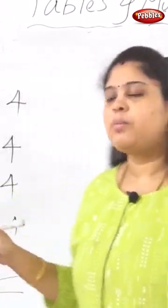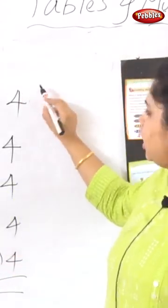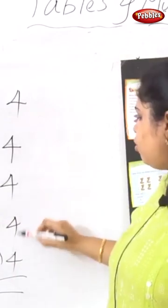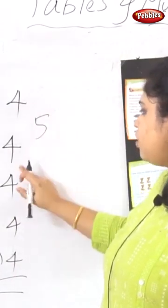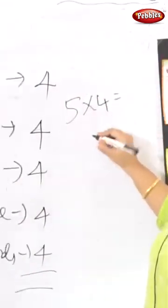If you learn the multiplication, how many 4's are there? 1, 2, 3, 4, 5. Five 4's. So 5 into 4, 20.